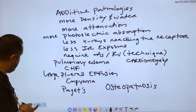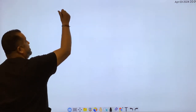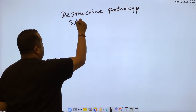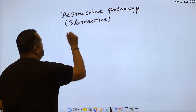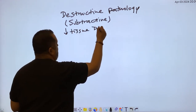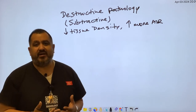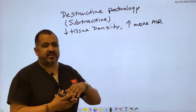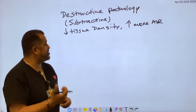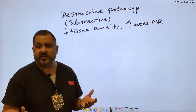The next category is destructive pathology — also described as subtractive pathology. Destructive pathology is where you have a loss of tissue density of the object, or you're going to have more air or gas inside the body. Air and gas are very radiolucent — the x-rays go right through. The additive pathologies were radiopaque. So if you have a loss of tissue density or more air, you're going to have to decrease your technical factors.